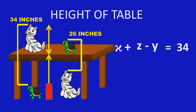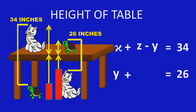Next, 26 is equal to the height of the Turtle, that is Y, plus the height of the Table minus the height of the Cat, that is Z minus X. So Y plus Z minus X is equal to 26. Now we have two equations.